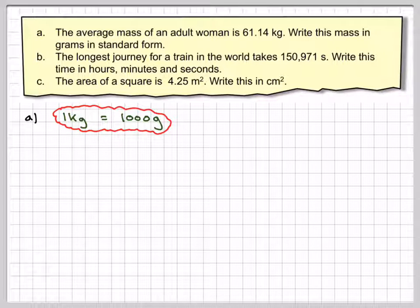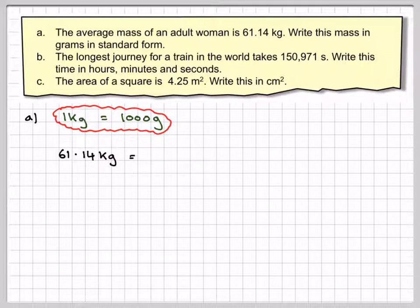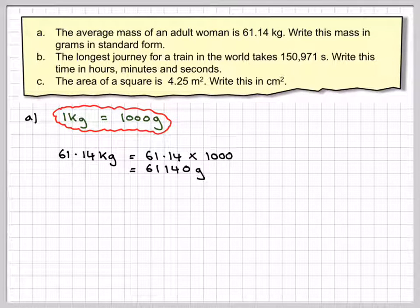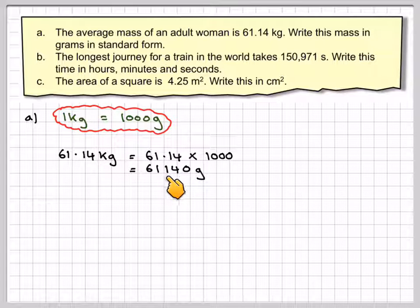So in part A, one kilogram we know is equal to 1,000 grams. Therefore, if we've got 61.14 kilograms, that's 61.14 times 1,000. That means I move that decimal point four places, so it's going to be 61,140 grams.